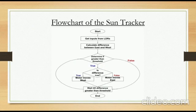Now, to talk about the logic behind our sun tracking part, the LDRs receive the inputs and the difference between both the LDRs are calculated. Now, it is checked if the difference is greater than the threshold or not. If not, then it would wait till the difference gets greater than the threshold and the process would continue.